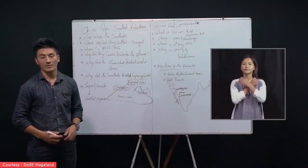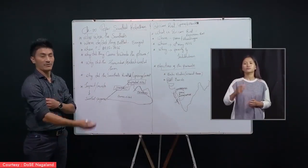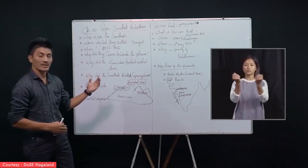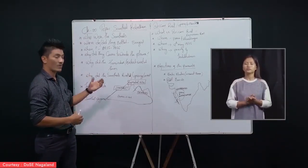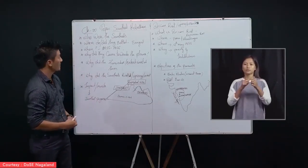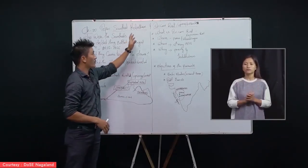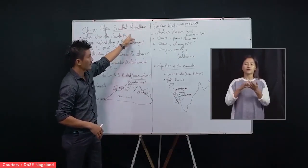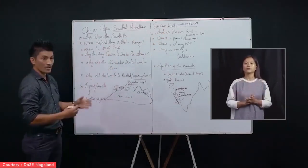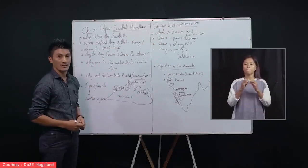Hello my dear class 12 history students. Today we will continue with the previous chapter, that is colonialism and rural society. In the previous class we have been talking on how colonialism affected the lives of the Indian peasants or Indian farmers. So today we will be discussing two very important topics: the Santal Rebellion and the Deccan Riot. These two are also an outcome or an impact of colonialism or the coming of British rule in India.